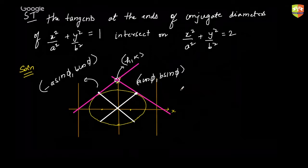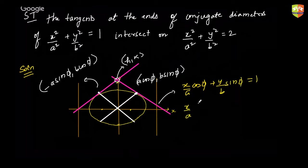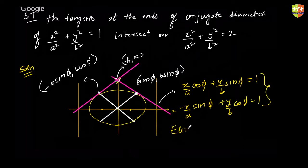Let's write the equation of the tangent at the first point. The tangent equation would be (x/a)·cosφ + (y/b)·sinφ = 1. For the other point, we just replace x₁ with −a·sinφ, so it becomes −(x/a)·sinφ + (y/b)·cosφ = 1. Our aim now is to eliminate φ from these two equations.